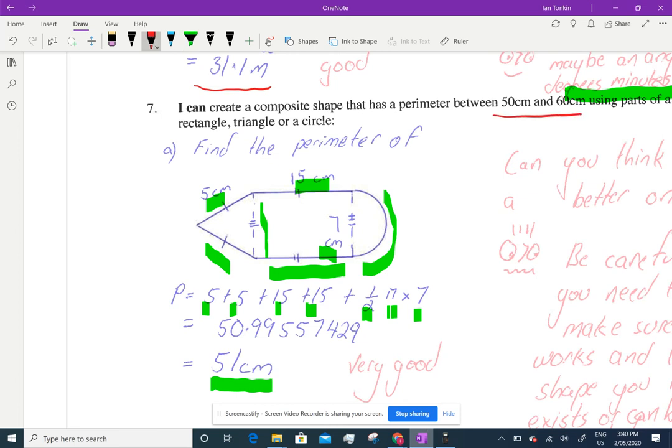Remember, the range that you have to have it is between 50 and 60. It takes quite a bit of work to do that and work it all out. Now, when you're doing this, you only have to have a rectangle and a triangle or a semicircle or part of a circle, as long as you've got a composite shape.